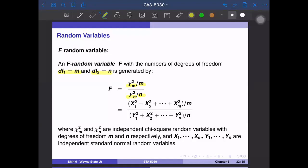This is the ratio of two chi-square distributions, and chi-square distribution usually represents some variance. That means the F statistic, F random variable, calculates the ratio of two variances.